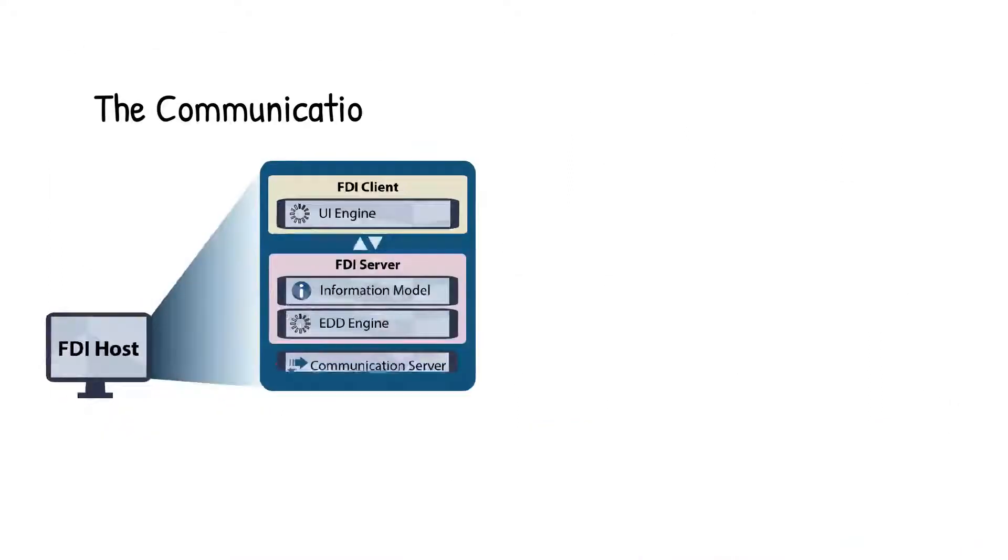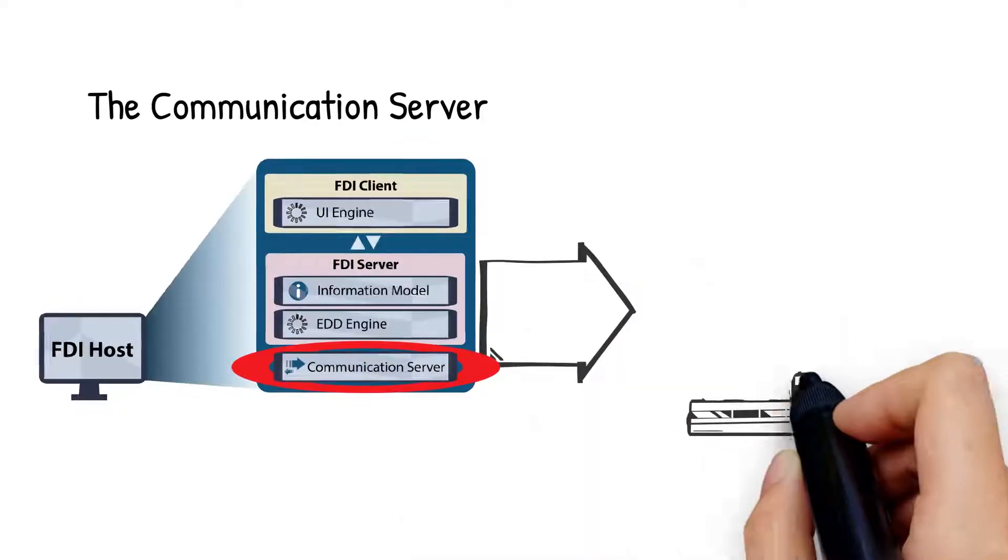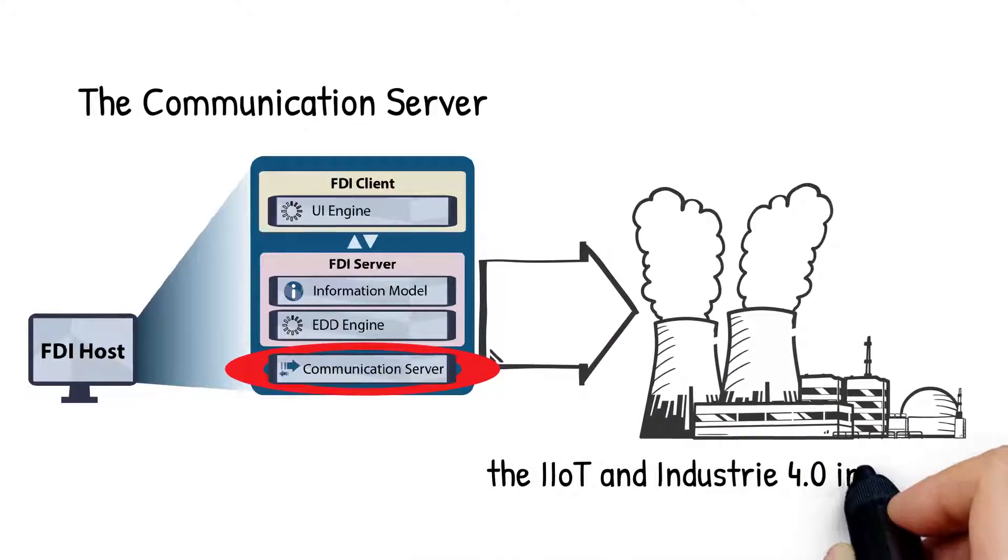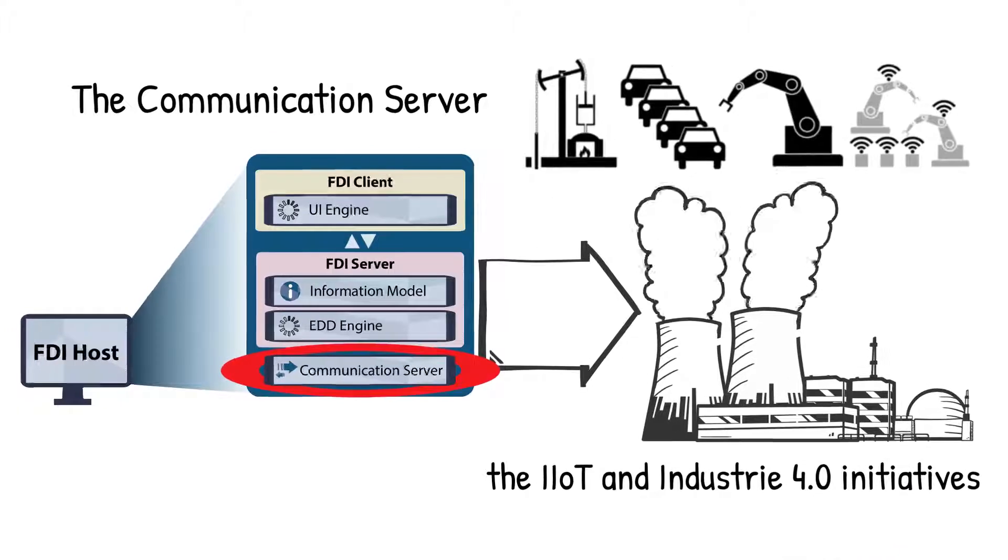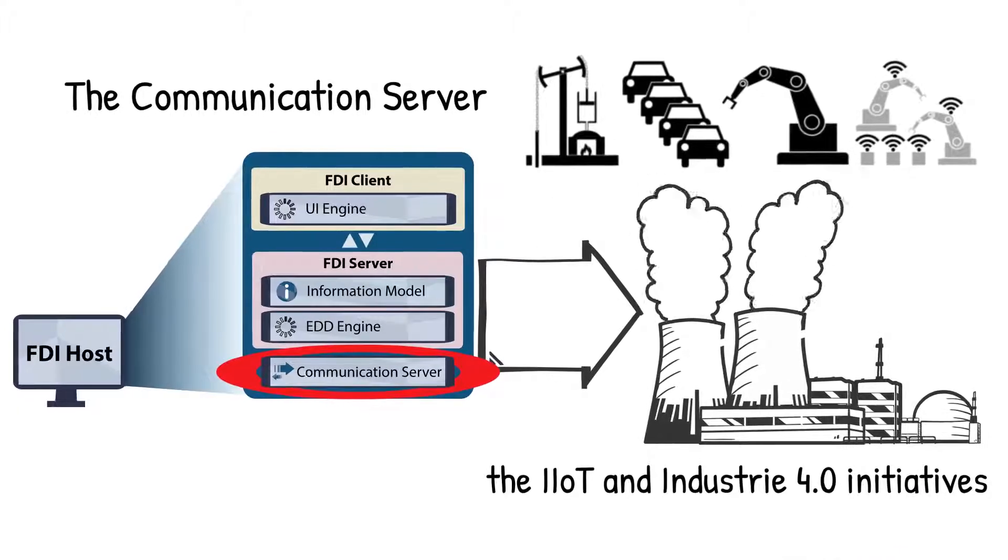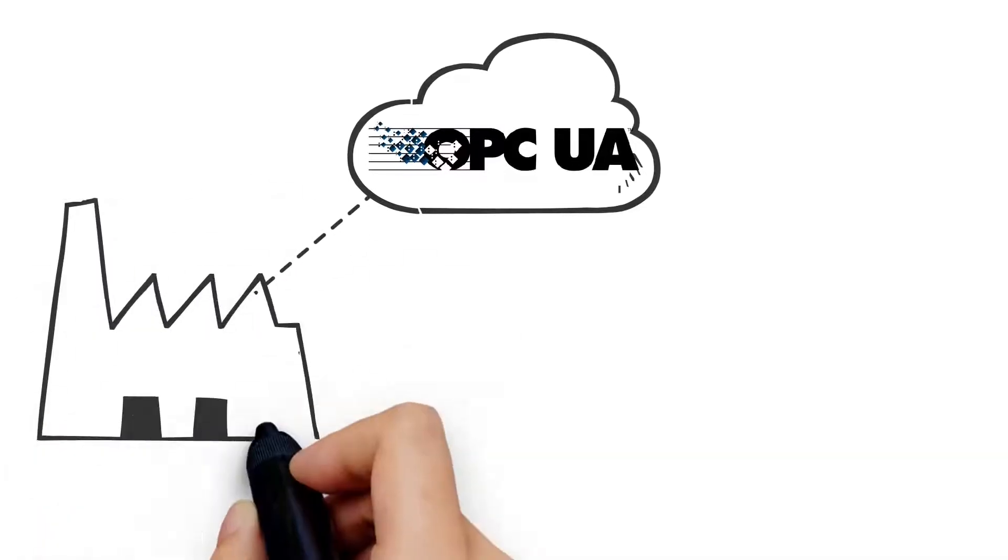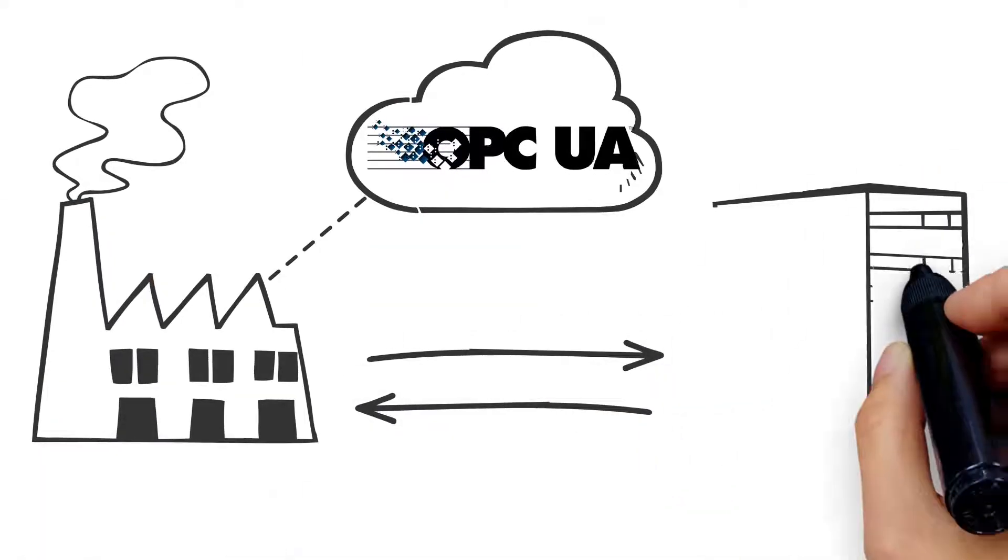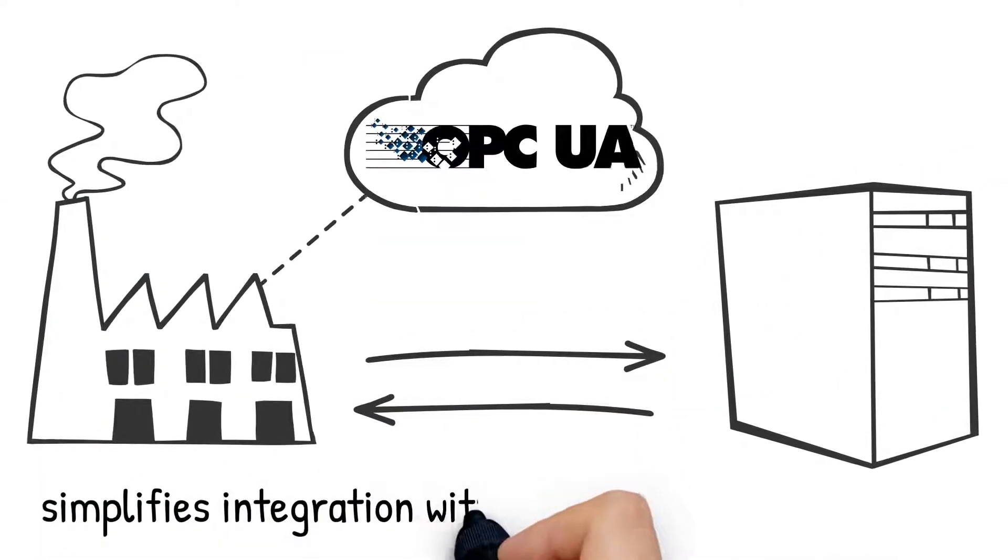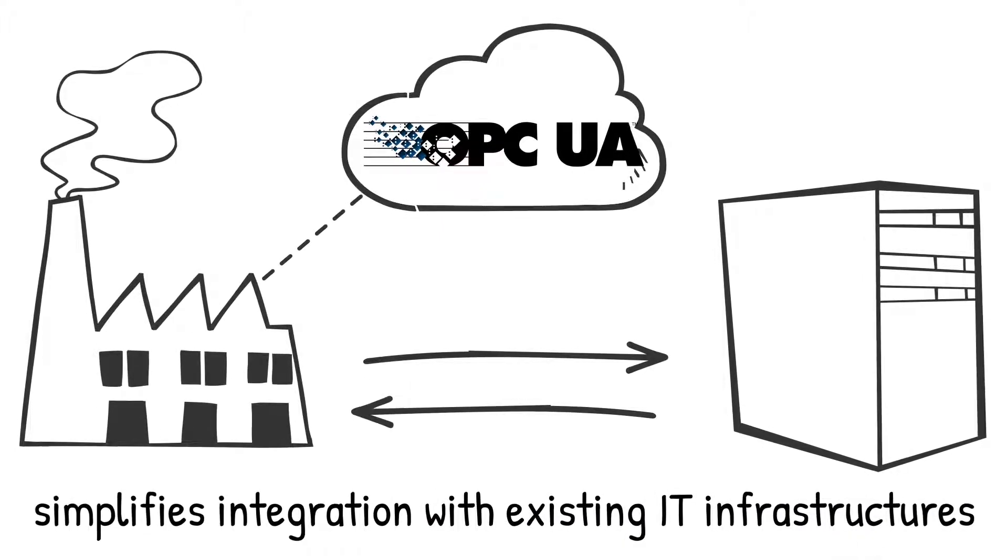The communication server is the key element enabling FDI to be broadly adopted into the IIoT and Industry 4.0 initiatives. In particular, the server enables local or cloud-based OPC UA connections, which simplifies integration with existing IT infrastructures.